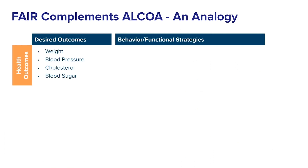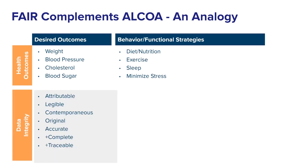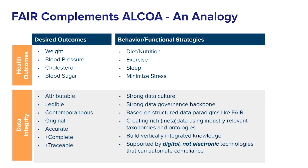FAIR principles are the data governance complement to the ALCOA Data Integrity Framework. We will use an analogy with health outcomes to make the point. From the health outcomes perspective, we usually think of the properties of our body and measure these to evaluate our health. When these outcomes are not in balance, we can either take medications specifically pinpointing each outcome, or we can change our behavior, which will bring the desired outcomes in a more holistic and enduring way. Similarly, our data integrity has to have certain properties to ensure high integrity. A strong data culture and a strong data governance backbone built on a FAIR data structure represent behavioral and functional strategies that can bring about the desired outcomes in a more holistic and enduring way.